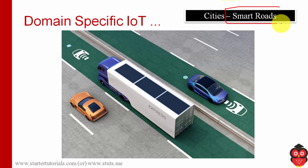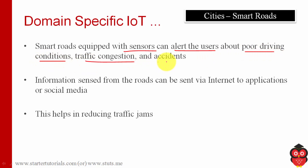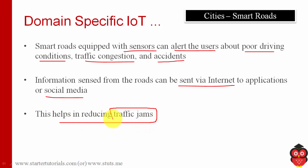The next application is smart roads. The roads will be equipped with different sensors, and data from these sensors can be used to alert users about poor driving conditions, traffic conditions, or accidents ahead, and divert them to another route. This data is sent through the internet and very much helps in reducing traffic jams.